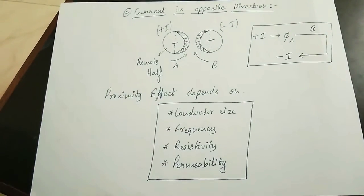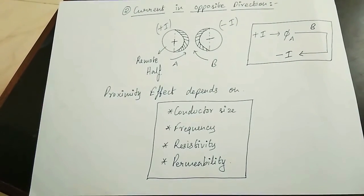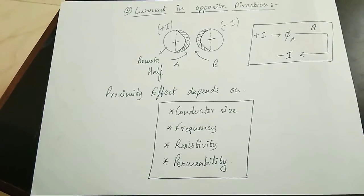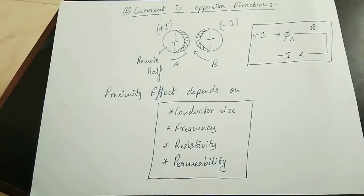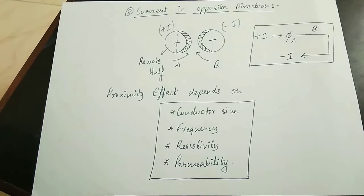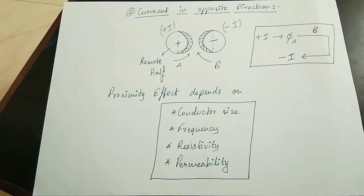The skin effect is the tendency of the alternating current to concentrate over the outer surface of the conductor. This is known as the skin effect.